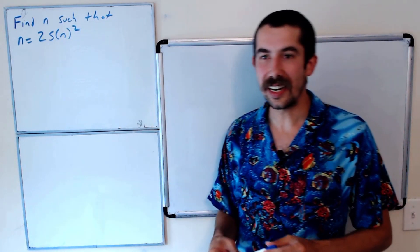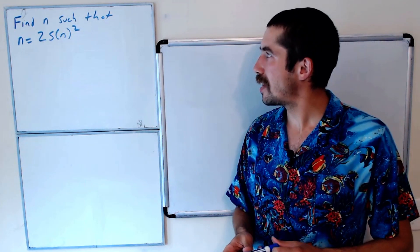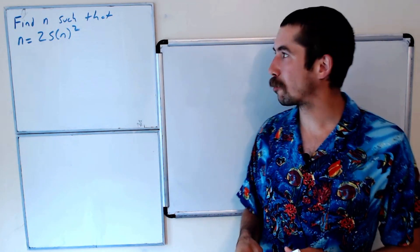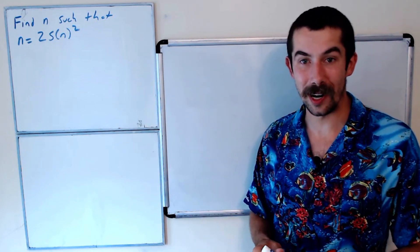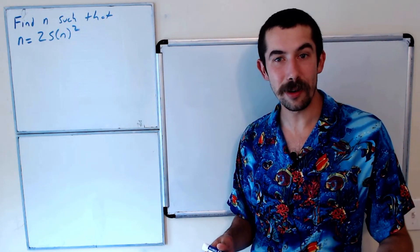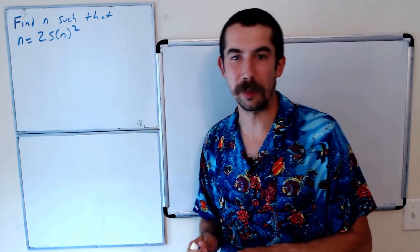Here's a question from the 2016 Indian Math Olympiad that I think you're really going to like. Find n such that n equals 2 times the sum of the digits of n squared. Try it on your own and let me know in the comments if you're able to solve it, or you can just watch me solve it.